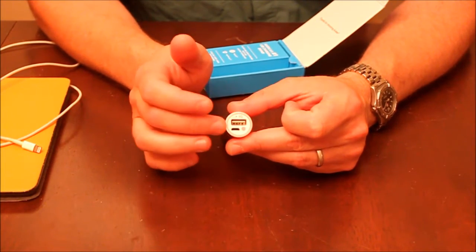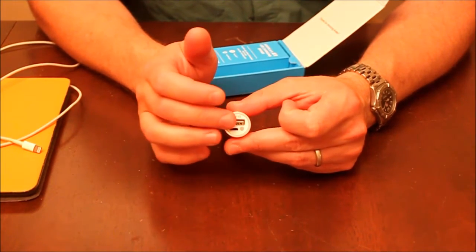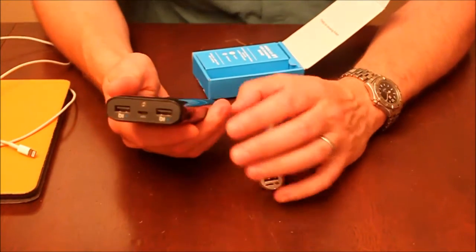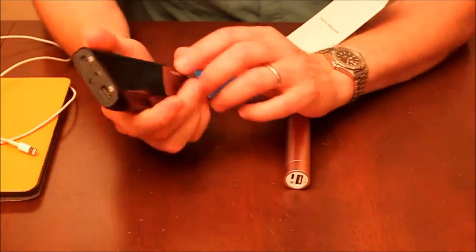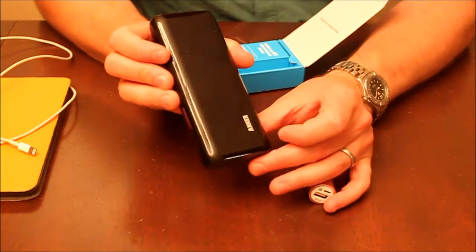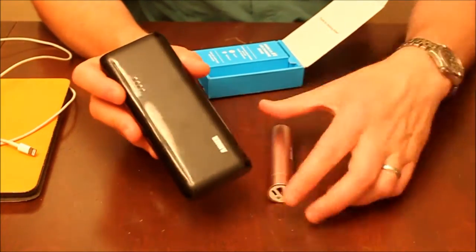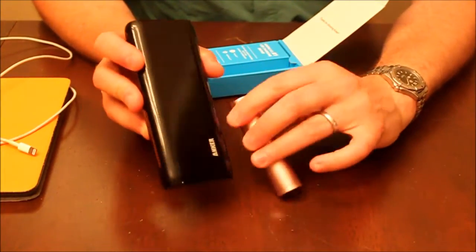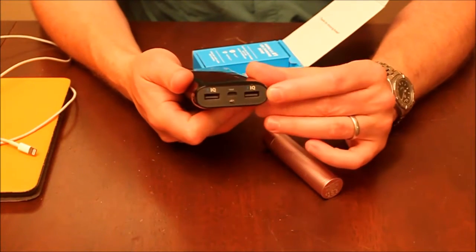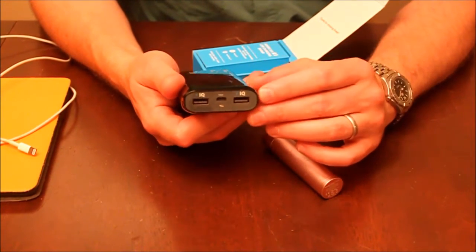Again, it maximizes at 1 amp output. Here I have the second-gen Astro E5 from Anker. This is a brute, a brick. It's definitely not as portable, but this thing can really put power out with two ports at 2.4 amps.